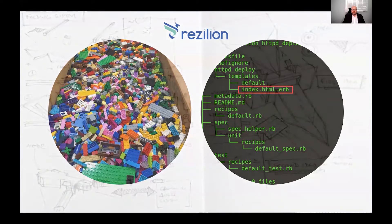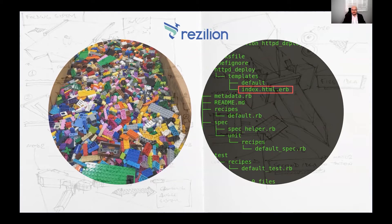What we've done at Resilium is take advantage of the declarative nature of modern development languages, frameworks, and architectures. We analyze the CICD pipeline and take all of that declarative intent — or desired state — and use it to build a dynamic policy, a dynamic whitelist. We automatically generate a profile of what should be running, because we know this is actually being done by the developers as they're putting together the application. So we can take this declarative intent from all these sources and use it to populate and build the allow list, the whitelist, the policy that we enforce at runtime.